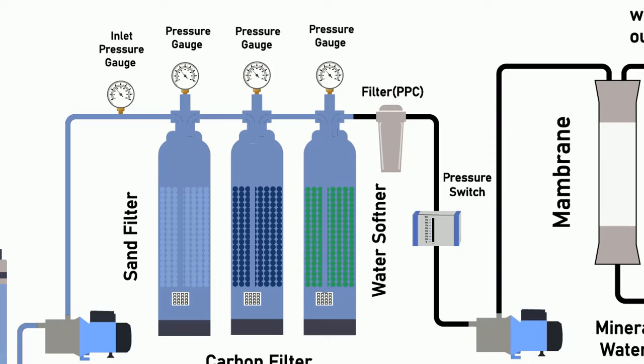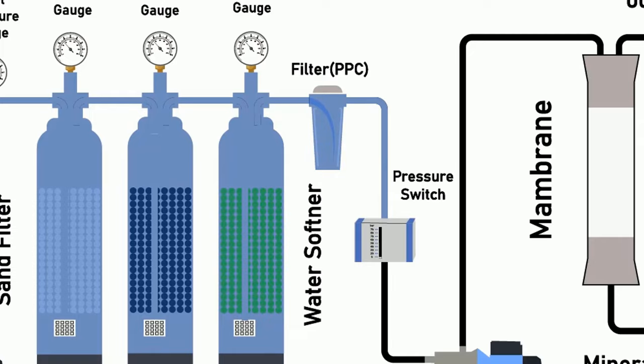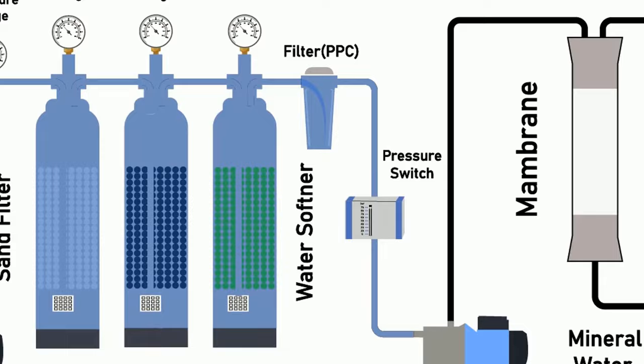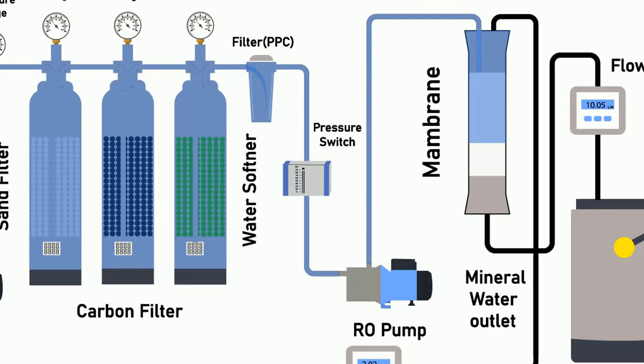Then the water travels to the PPC filter where it is further purified. After the PPC filter, water goes to the pressure switch. When the pressure of the water rises to a certain level so that it can travel to the membrane, the switch gives a signal to the control panel and it starts the RO pump.